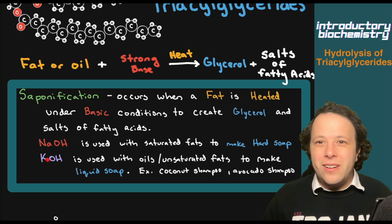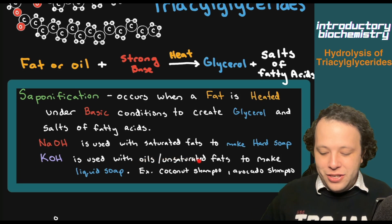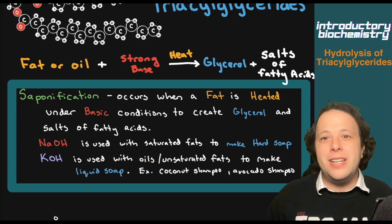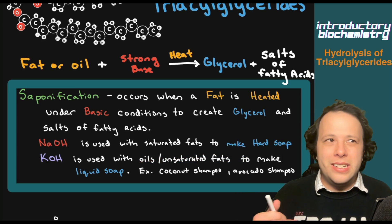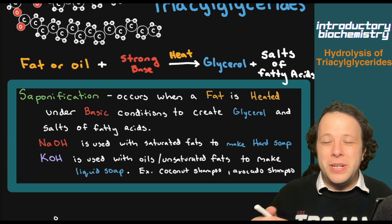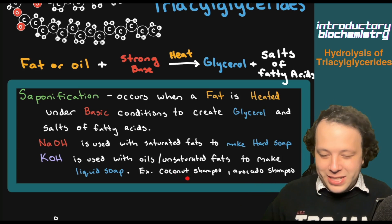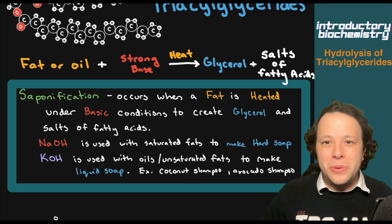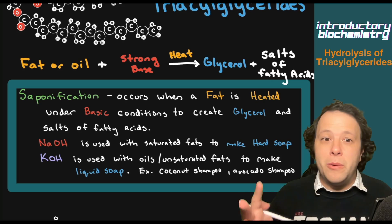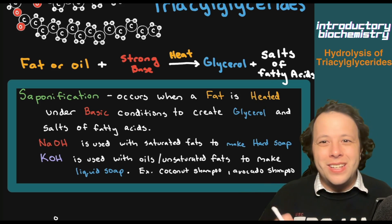If we add a slightly weaker base like KOH to an unsaturated fat, this is how you make liquid soaps, like what you find by your dishwasher or in shampoos and conditioners. For example, coconut shampoo or avocado shampoos are from unsaturated oils.